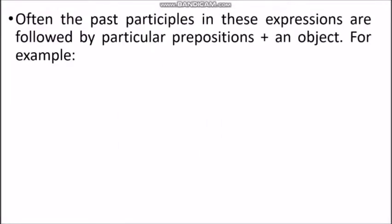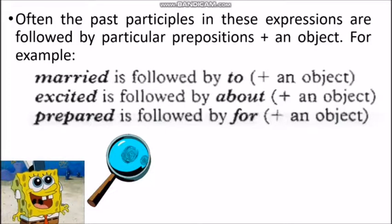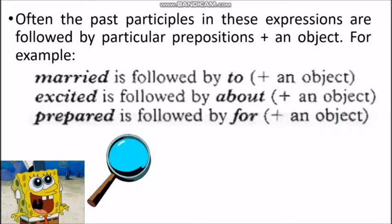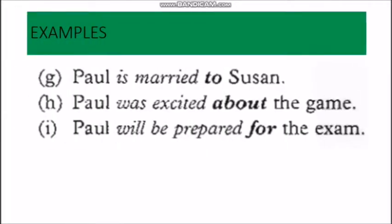Notice that we often use past participles in these expressions followed by particular prepositions plus an object. For example, 'married' is followed by the preposition 'to,' and 'to' is followed by an object. 'Excited' is followed by the preposition 'about,' and 'about' is followed by another object.